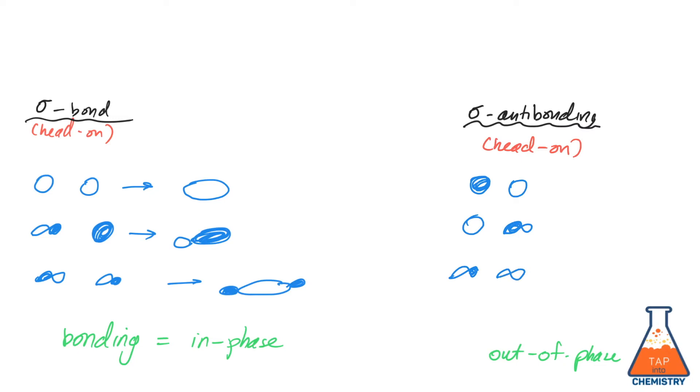One key difference between bonding and antibonding orbitals is when electrons are placed in each. If electrons are added to a bonding orbital, the strength of the bond between the atoms increases. But when electrons are placed in an antibonding orbital, the strength of the bond decreases.